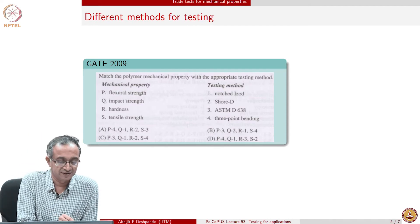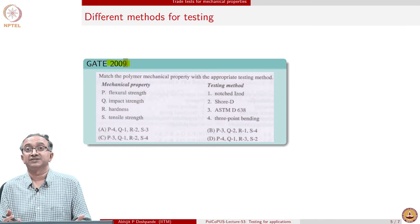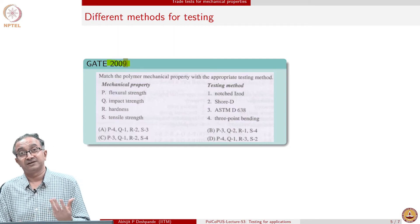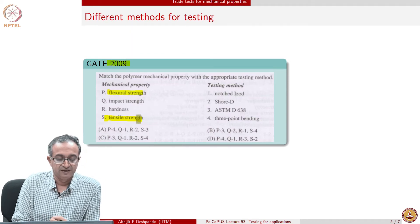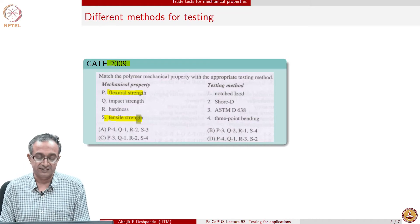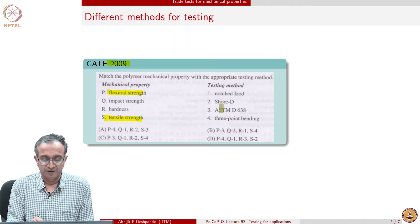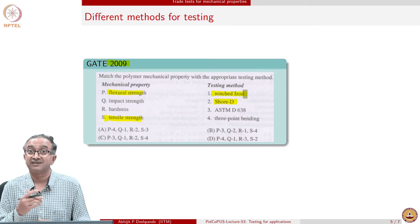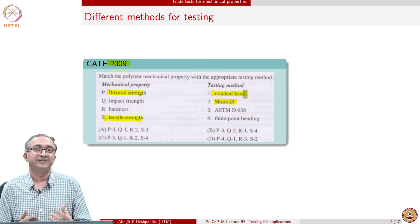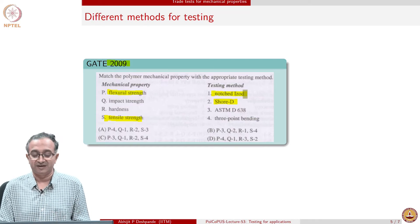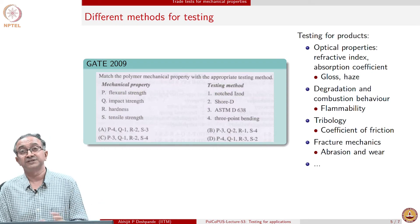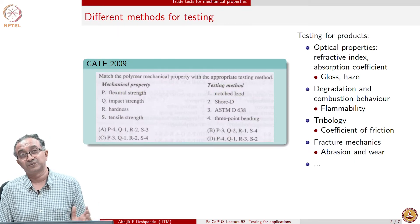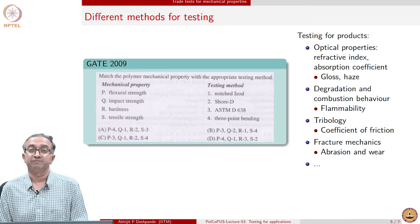To highlight this, we can look at an exam question where different types of tests are used. Some tests characterize material properties — for example, flexural strength or tensile strength. Then there are trade tests, such as Shore D and Notched Izod. The way these have been described gives part of the answer: if you look at the set of mechanical properties and testing methods, you should be able to figure out which test is useful for which mechanical property. Generally, not just in the mechanical domain, such trade tests are prevalent for all different kinds of measurements.